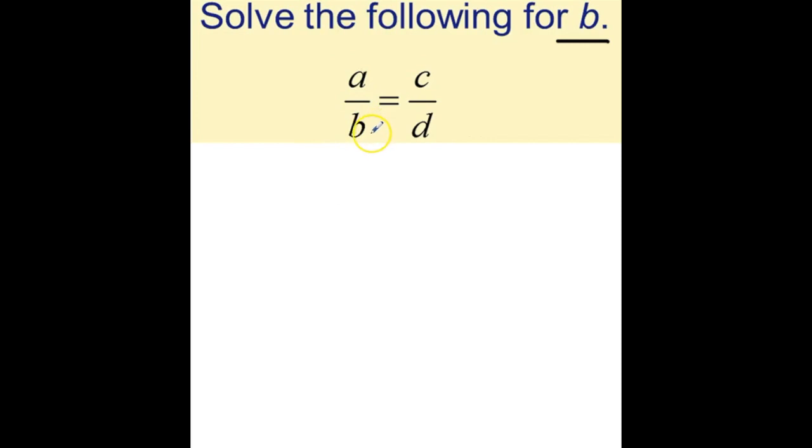Another way to solve for B, and most of you probably will do your problems like this, is to cross multiply. If you cross multiply, you go diagonally, so A times D equals B times C.